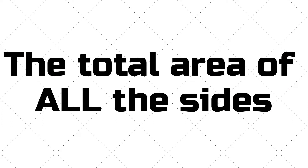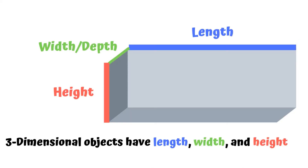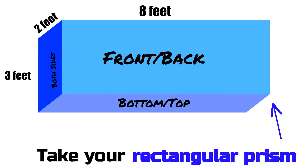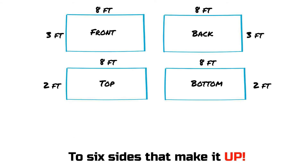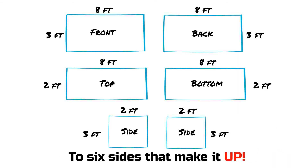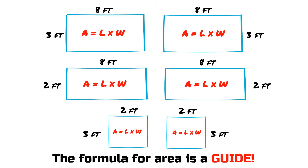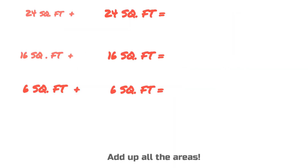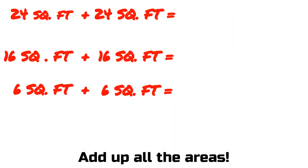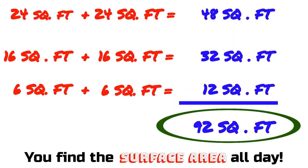Take your rectangular prism and break it down to the six sides that make it up. The formula of area is a guide — find the area of each side, take what you find and add them up for the sum you find. It's surface area all day.